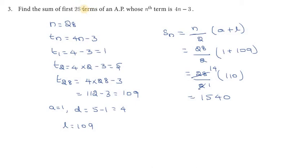Now for the last term, the 28th term: substitute n = 28, giving 4 into 28 minus 3. That is 112 minus 3, which equals 109. So t28 = 109, which is the last term.